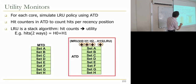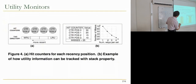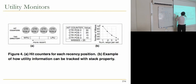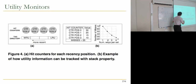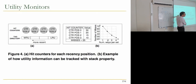LRU is a stack algorithm, so hit counts give you utility. For example, hits with two ways equals hits in way zero plus hits in way one. In a four-way cache example, the counter at position zero (MRU position) gives 30 hits, position one gives 20 hits, position two gives 15 hits, and position three gives 10 hits.